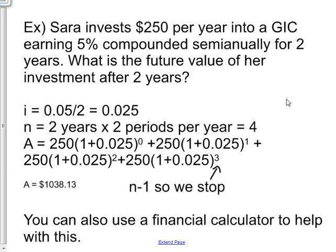The interest per compounding period is going to be the 5% written as a decimal, so 0.05 divided by 2, because it compounds twice per year, so that equals 0.025. N is going to be 2 years times 2 periods per year, so that's going to be 4.